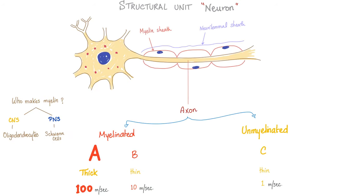Some neurons are myelinated, others are not myelinated. However, all of them have beautiful neural minimal sheaths. Myelinated axons: A fibers and B fibers. A fibers are thick, B fibers are thin. C fibers are the worst — they are unmyelinated and thin. This is conveyed in the velocity of nerve transmission: A, thick and myelinated, 100 meters per second — the fastest. B, thin, only 10. C, thin and unmyelinated, just 1 meter per second.